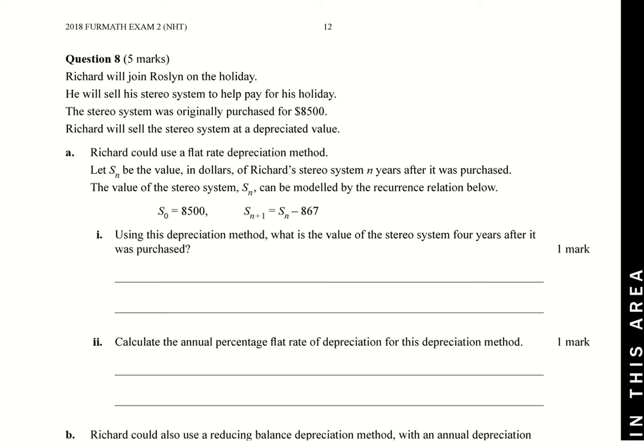Okay, so in this video we're going to look at Question 8 from the 2018 third math exam from the NHIT. This is part of the financial recursion math. Richard will join Roslyn on holiday. He's going to sell his stereo to help pay for it. He originally purchased it for eight and a half grand, and he's going to sell it at a depreciated value. So that eight and a half grand is represented by S0, that's your starting term, and then you're going to use this recursion relation to work out what it is after four years.